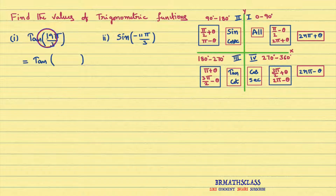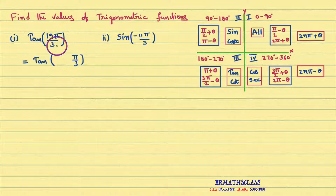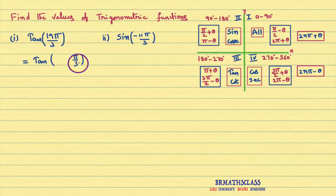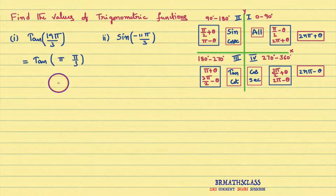Many students find it difficult how to split this, but it's the simplest thing. You see here, π by 3 is there. You write π by 3 first. In case you see 19π by 4, you write π by 4 here. If you see 19π by 2, you write π by 2 here. Like that — here π by 3 is there, so first you write π by 3. Then, immediately without thinking, you just write π here. That's it — just write π. For any problem, you just write π.